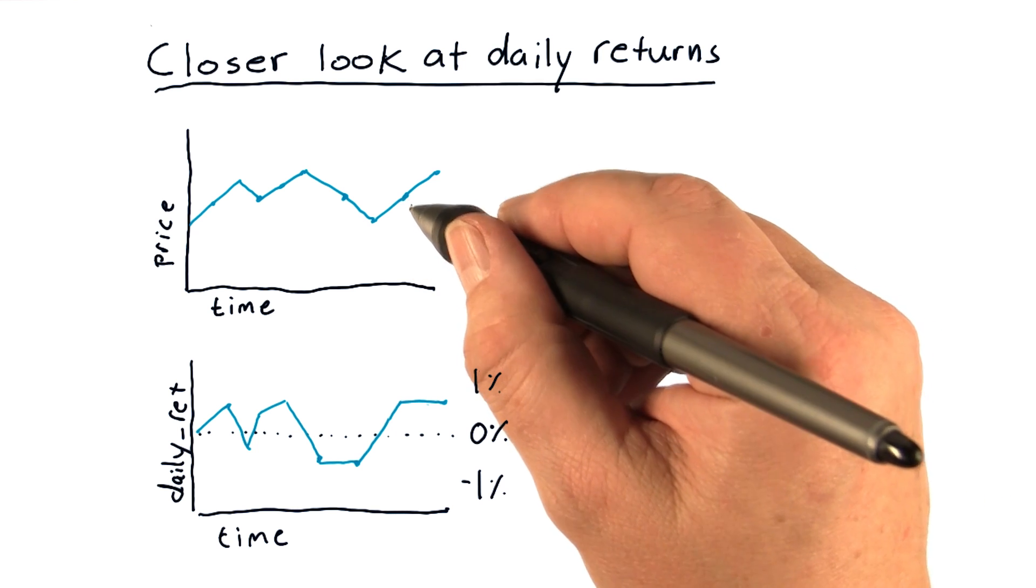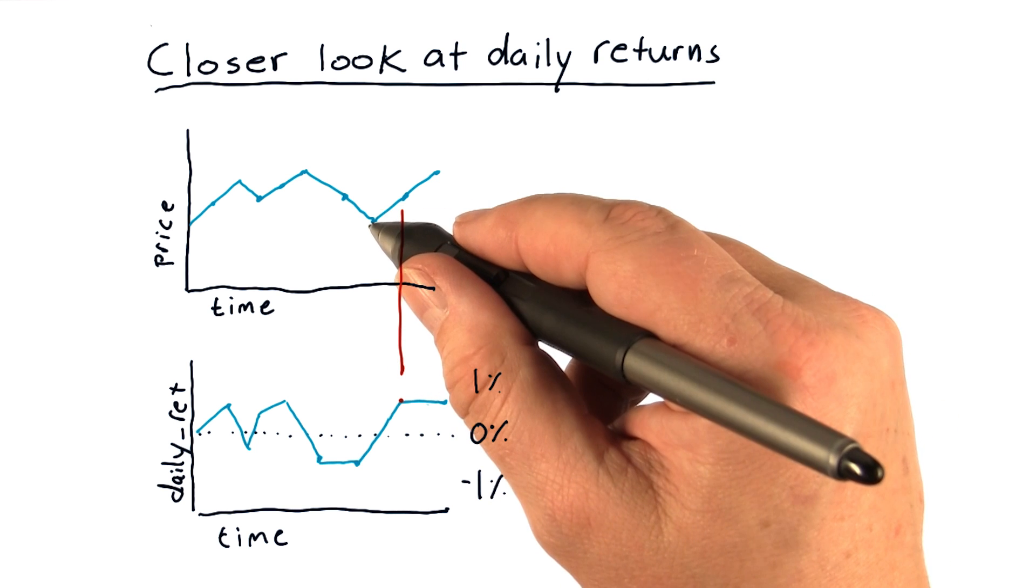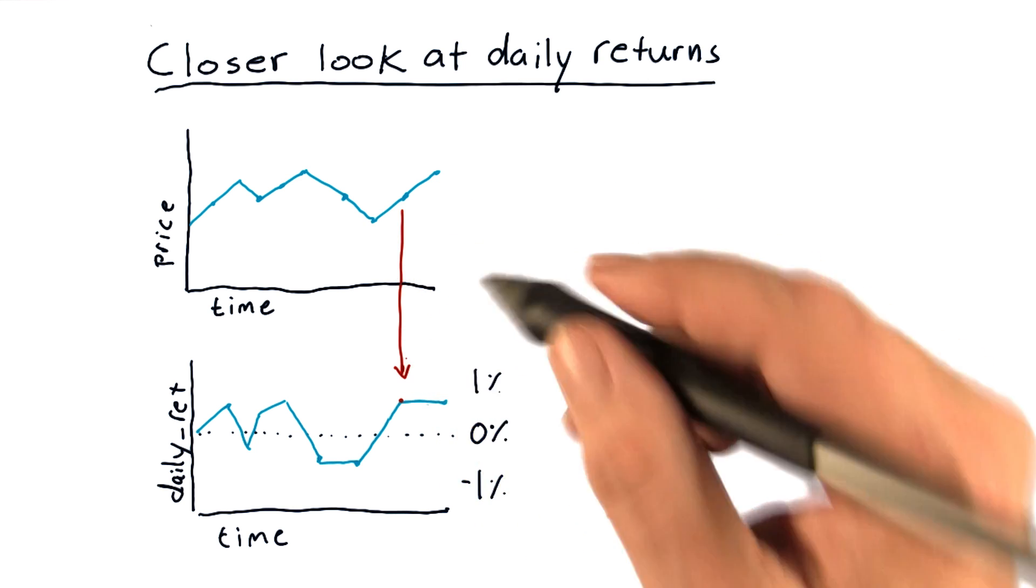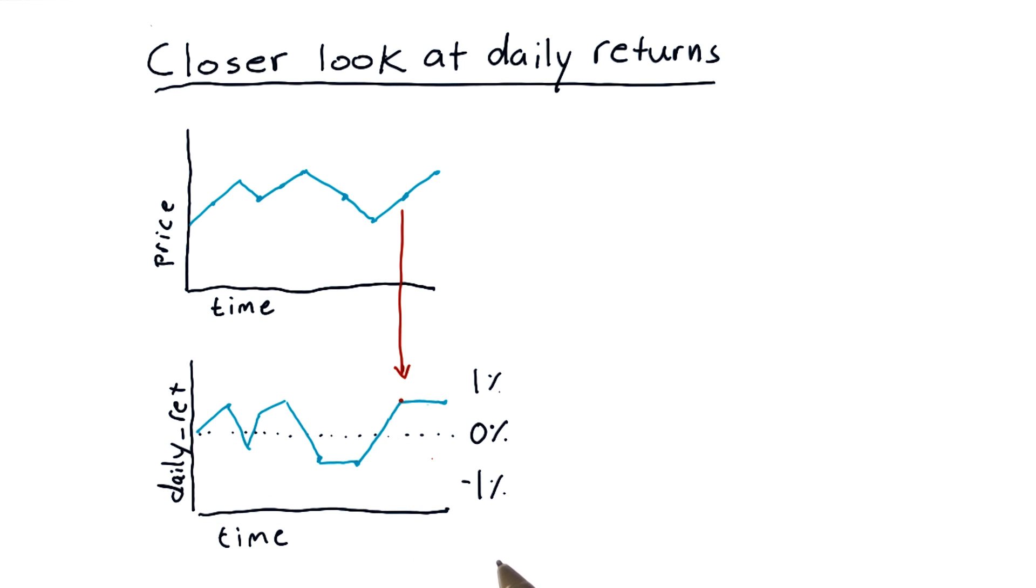So for instance, this represents how much the price changed from this day to that day, about 1%. And of course we have that for each of the days in our history.